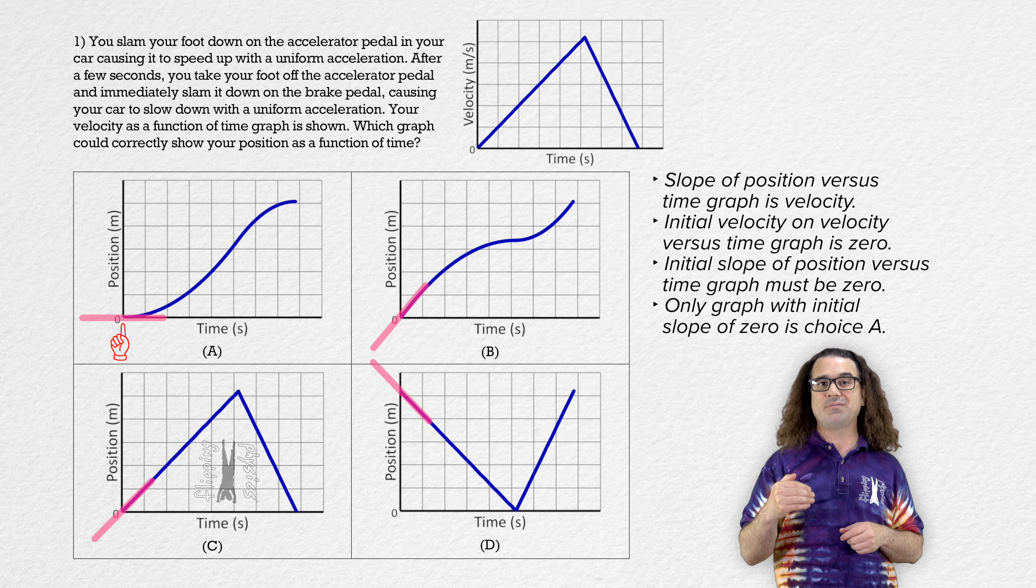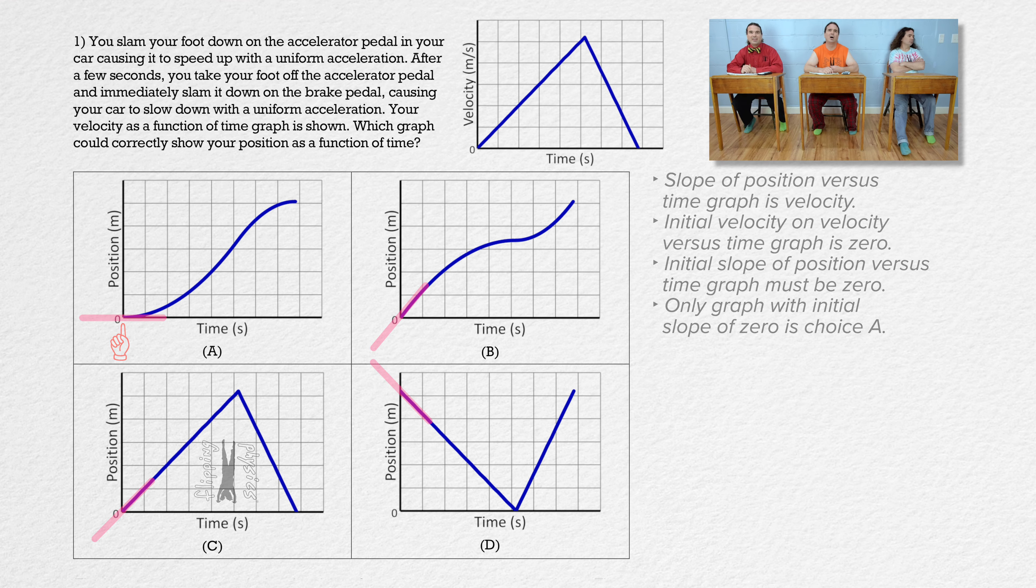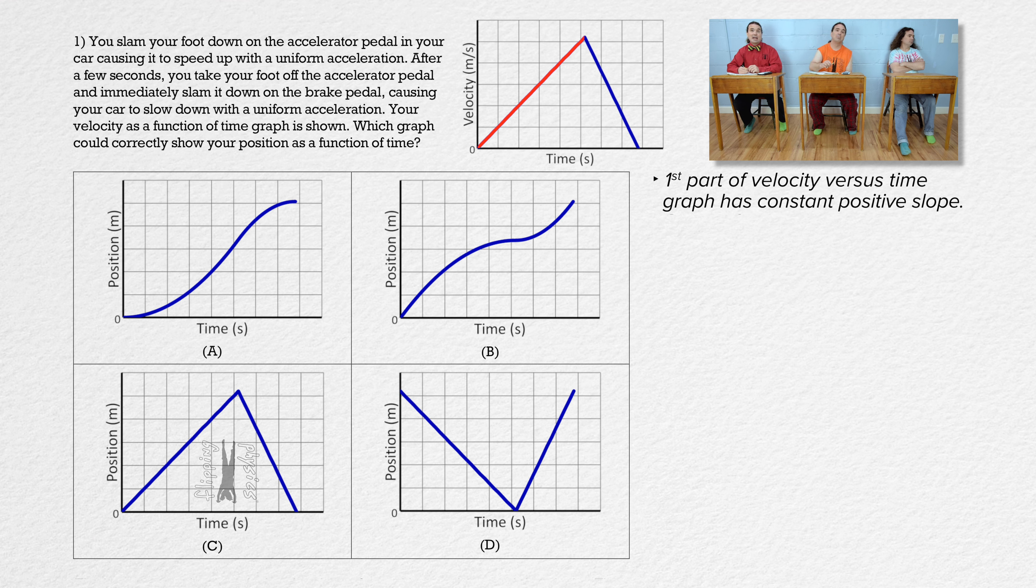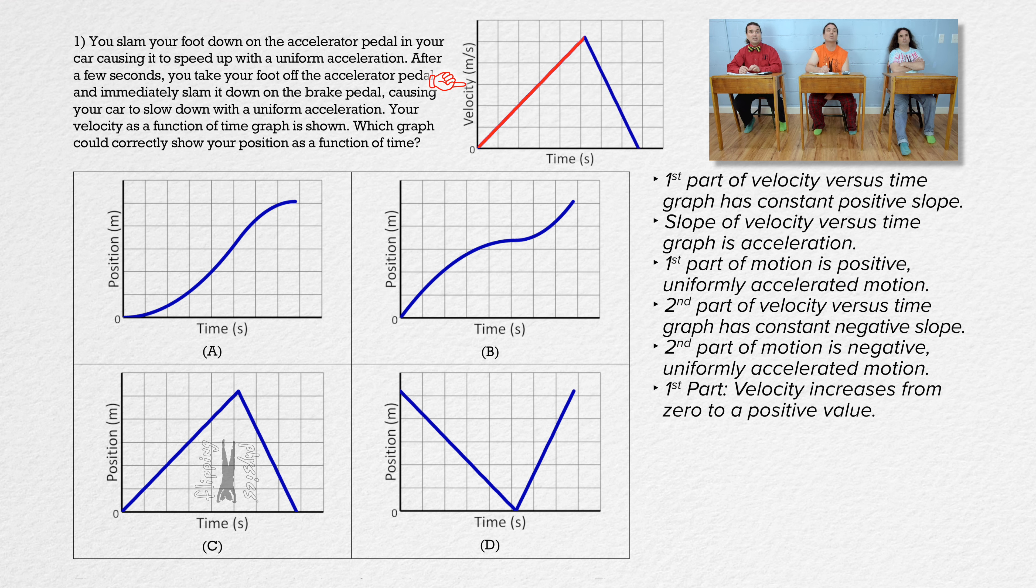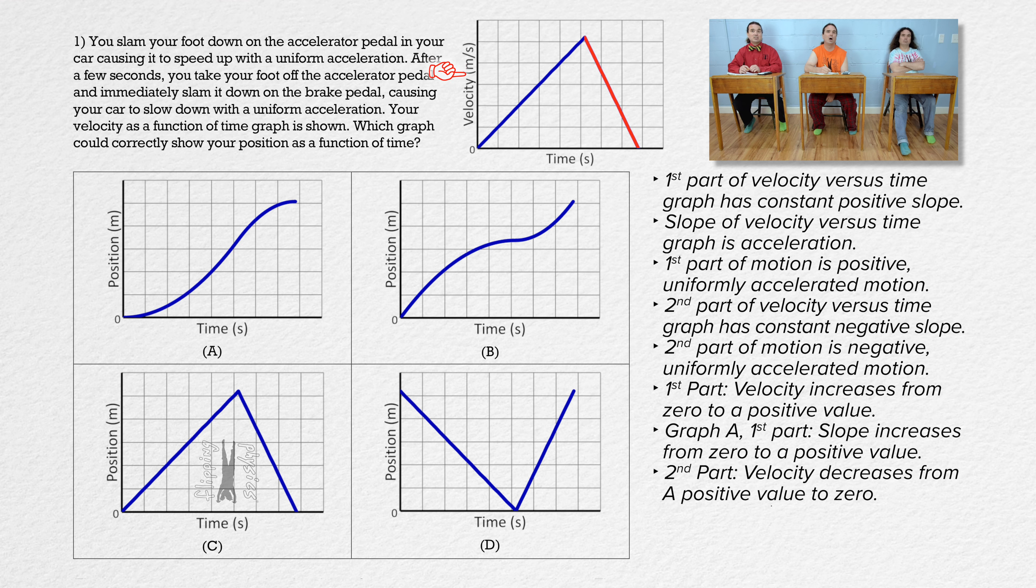Billy, please explain how the rest of the velocity versus time graph fits with choice A. Absolutely. The first part of the velocity versus time graph has a constant positive slope and the slope of a velocity versus time graph is acceleration. Therefore, the first part of the motion is uniformly accelerated motion with a positive acceleration. And the second part of the velocity versus time graph has a constant negative slope, and is therefore uniformly accelerated motion with negative acceleration. Going back to the first part, the velocity increases from zero to some positive value, so the slope of the position versus time graph increases from zero to some positive value. And then in the second part, the velocity decreases from the same positive value to zero, so the slope of the position versus time graph decreases from the same positive value to zero.